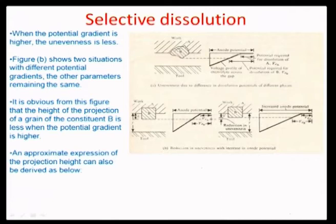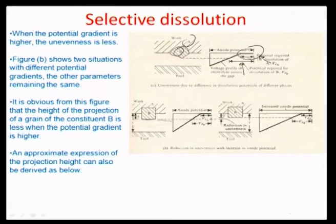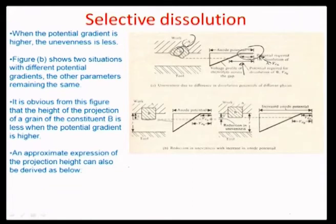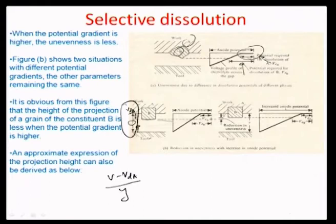There are two phases B and A where there is a difference in the dissolution potential V_dA. The dissolution potential of A is lower compared to V_dB, and therefore there is a self-roughening where the B phase only gets dissolved when it hits that particular plane. The electric field, which is proportional to current density, is examined by looking at the gap y between the tool and the surface A, where the available dissolution potential for A is V_dA. So V minus V_dA divided by y is the electric field across this particular gap.